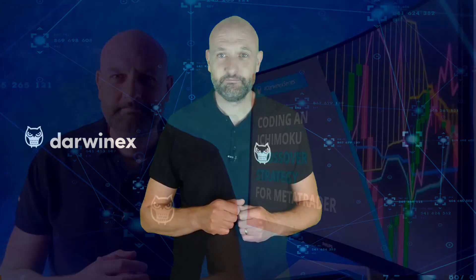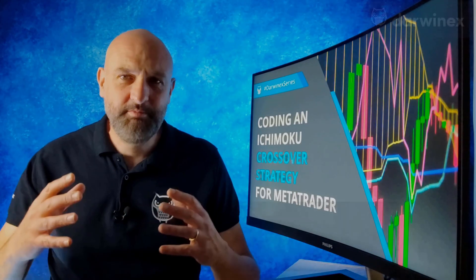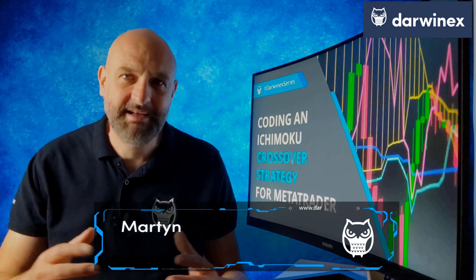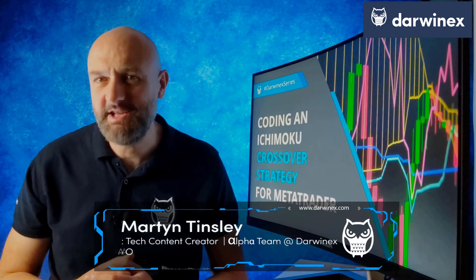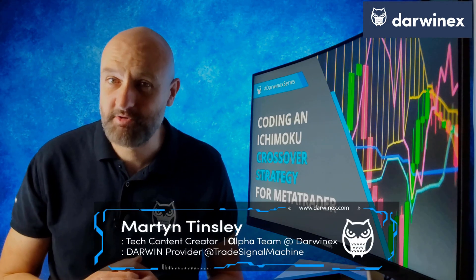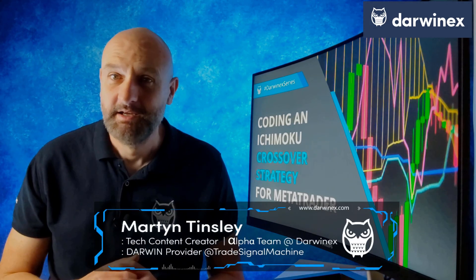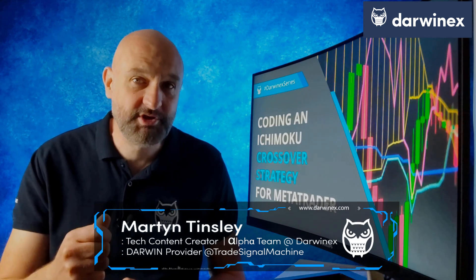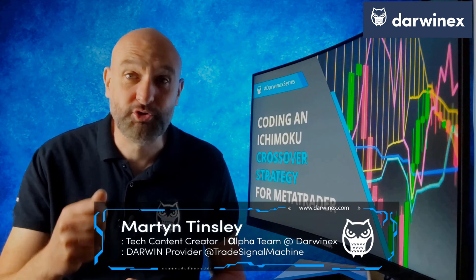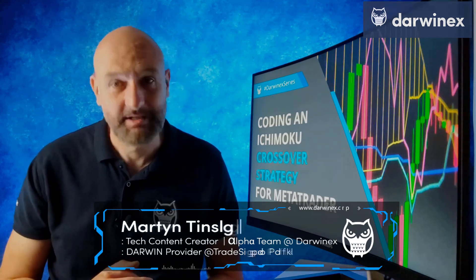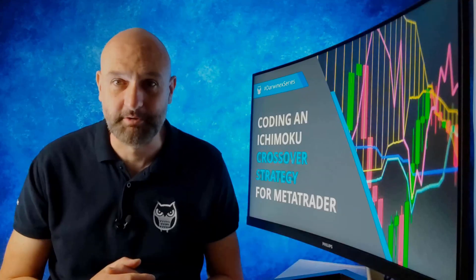Now back to today's tutorial. There's something unique about the Tenkan Sen and Kijun Sen lines of the Ichimoku indicator that means standard crossover code doesn't work properly. Let's take a closer look.